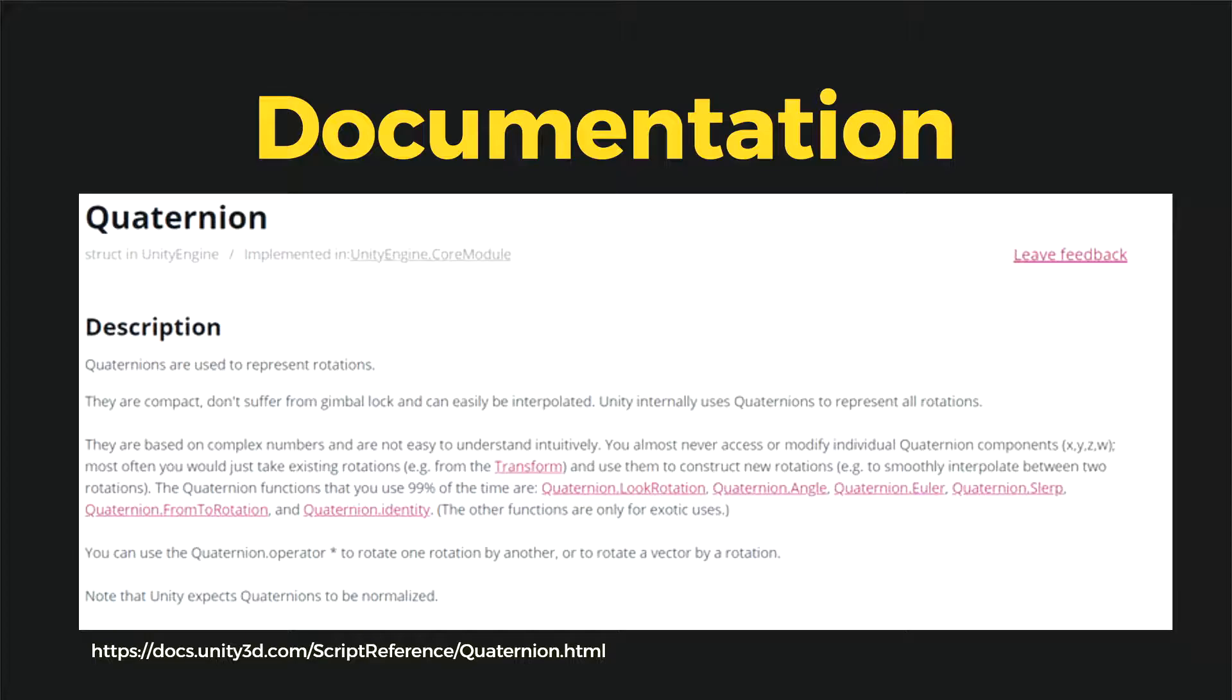First, if you take a look at Unity documentation on the topic, we can read that quaternions are used to represent rotation. So why do we use quaternions instead of Euler angles?